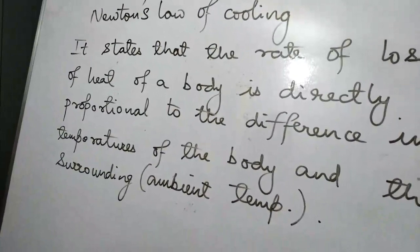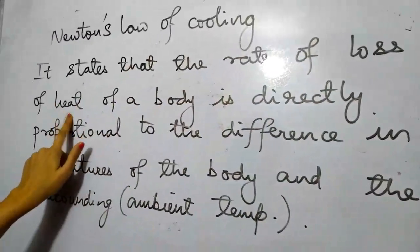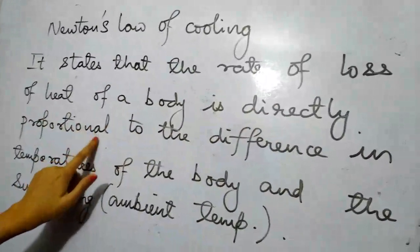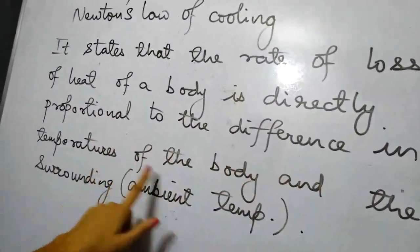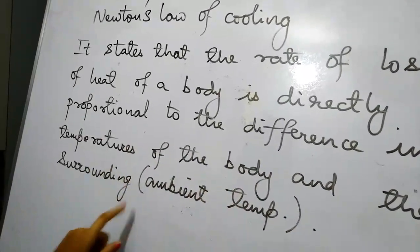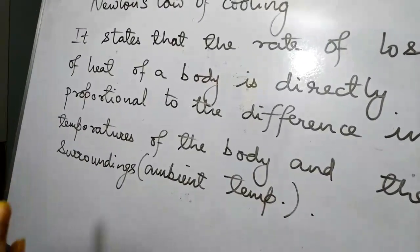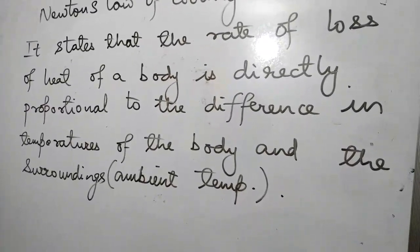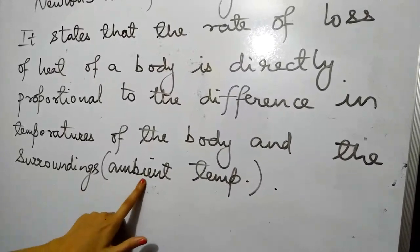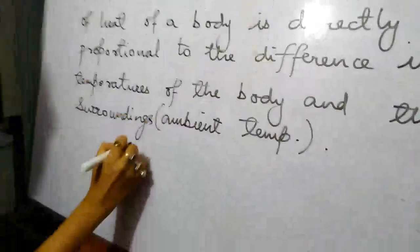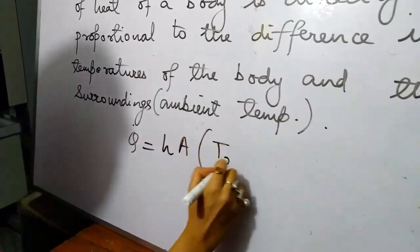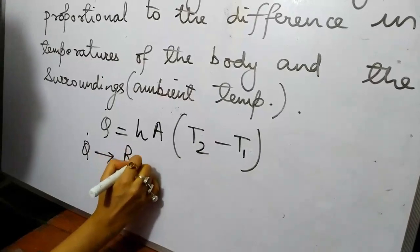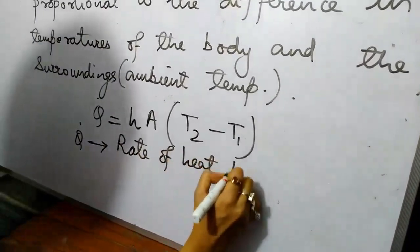What does this mean? The rate of loss of heat — where will the heat loss occur? It will be from the higher temperature body. The rate of heat loss is directly proportional to the difference in temperature of the body and the surroundings, i.e., the ambient temperature. For example, if we consider a solid block that is losing heat to surrounding air, the ambient temperature is the air temperature. From this we get the formula: Q̇ = h × A × (T2 − T1).